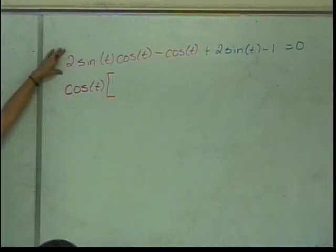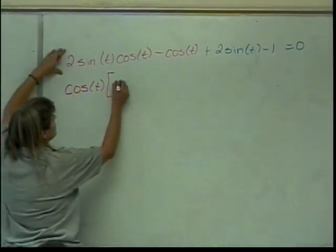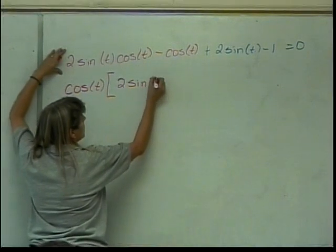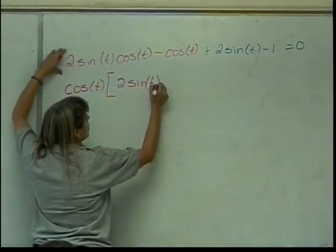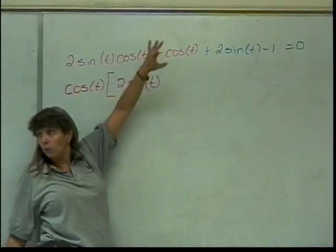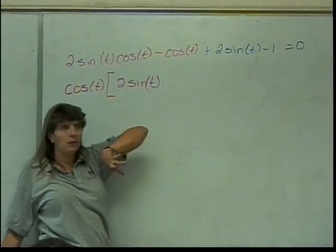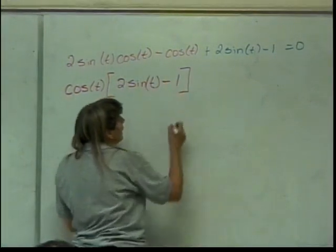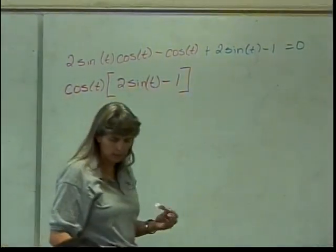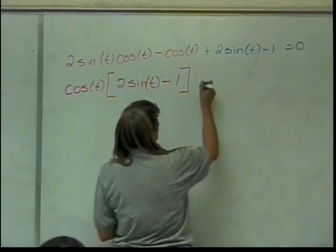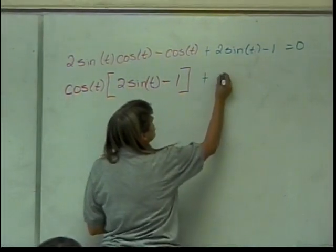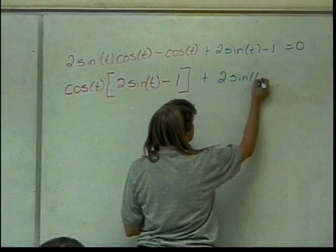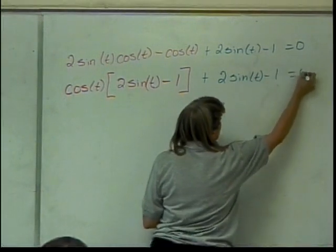What am I left with? 2 times the sine of t. When I factor it out of the second piece, what am I left with? Minus 1. And I still have this plus 2 sine of t minus 1 equals 0.